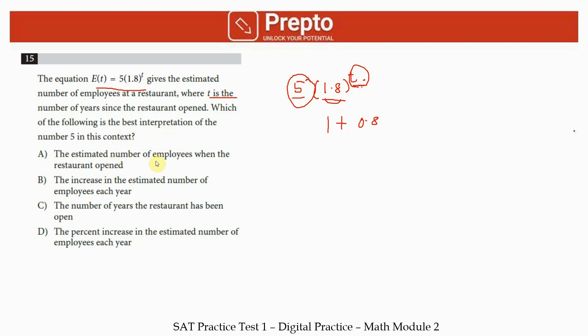This 5 is what you started with, so the best interpretation of 5 is the estimated number of employees when the restaurant opened. You can also find that 5 is what happened when it opened by substituting t equals 0. When you put t equals 0, this whole thing becomes 1 and you get 5 as the value when the restaurant just started.